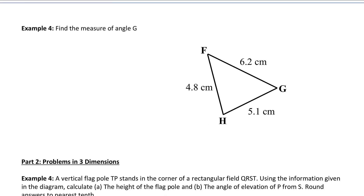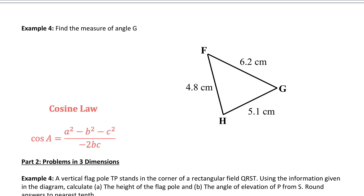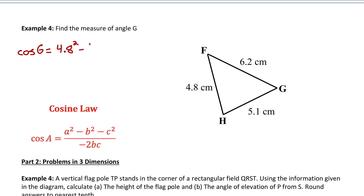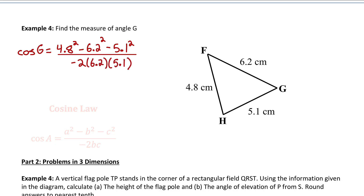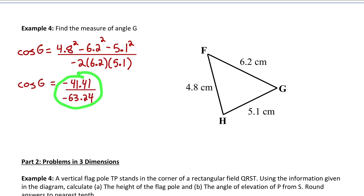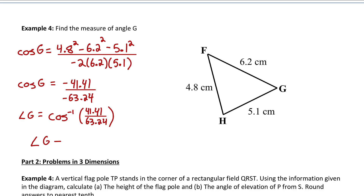Example four — our last two-dimensional question — asks us to find the measure of angle G. We don't know if it's a right triangle, but we do know all three sides. When you know all three sides, you use the rearranged cosine law. Setting up cosine(G) = (4.8² minus the squares of the other two sides) divided by negative two times those other two sides, then simplifying and applying inverse cosine gives angle G ≈ 49.1 degrees.